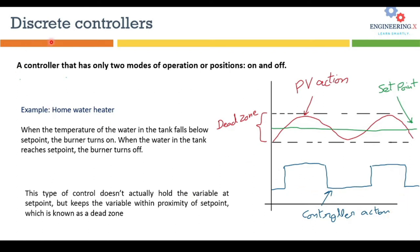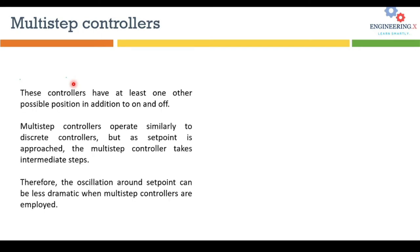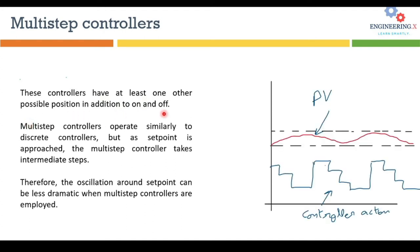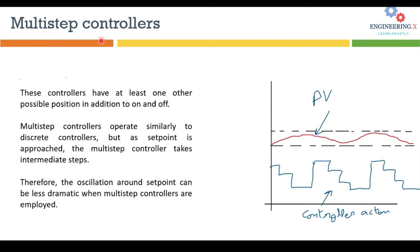The second type is multi-step controllers. These controllers have at least one or more intermediate positions apart from the on/off position. They operate similarly to discrete controllers, but as the set point is approached, multi-step controllers take intermediate steps. As a result, the oscillation around the set point is limited — there should not be dramatic oscillation across the set point.